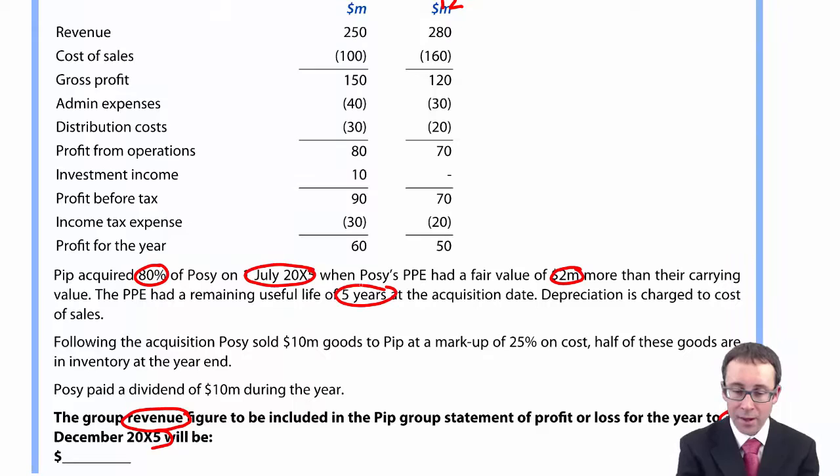It goes on to tell us that Posy's PPE had a fair value of 2 million more than its carrying value. So there's a 2 million dollar uplift and it had a remaining life of 5 years. So that 2 million will be depreciated over 5 years. But do just be very careful that you prorate it there by the 6 months for the current year. Likewise, there was a 10 million dollar intra-company sale whereby Posy, who is the sub, sold the goods. Again, standard 25 percent markup and half of them are in inventory at the end of the year. And it also says there that Posy, so the subsidiary, paid a dividend of 10 million during the year. So that 10 million will have come out of Posy's profits of which Pip will have recorded its share.